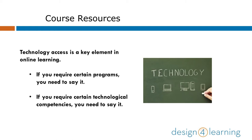Technology resources are certainly a key element of online learning. When you are listing the sources needed, you need to remember to explicitly state if you require access to certain programs. Additionally, if your course or lesson requires a certain level of technological competence, you'll need to state it as well. Often in online courses, you can say that you require familiarity with email, a certain LMS, or anything else that you believe are essential prerequisite skills. It can be uncomfortable to ask for this, but remember that you cannot assume the abilities of your students, and it can be really good to have a baseline of skills that you know your students possess. In some settings, it can also be helpful to point learners to other sources where they can gain the skills they need as a prerequisite.